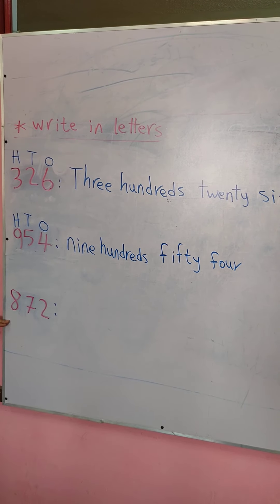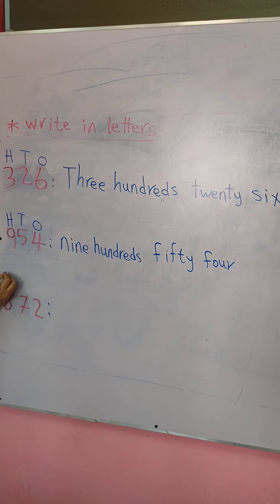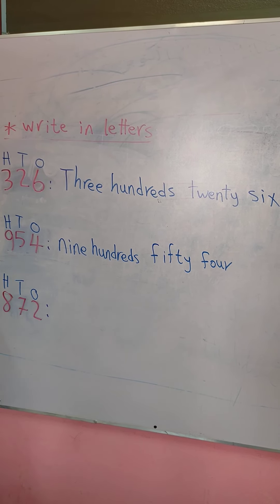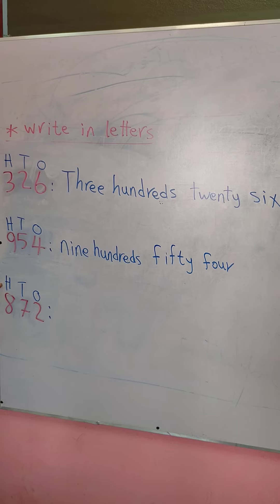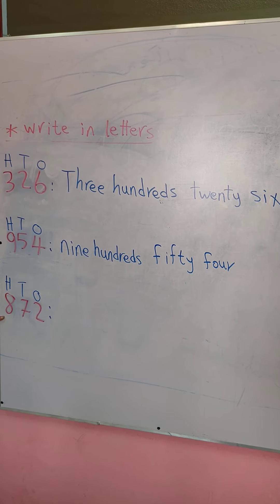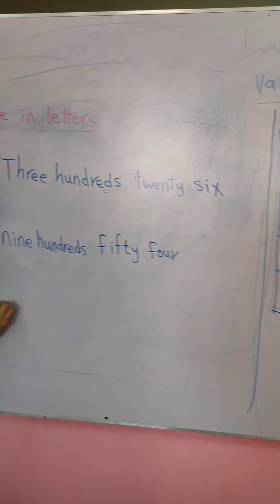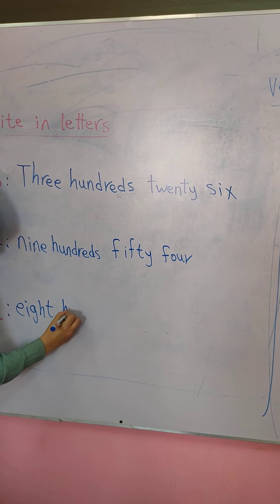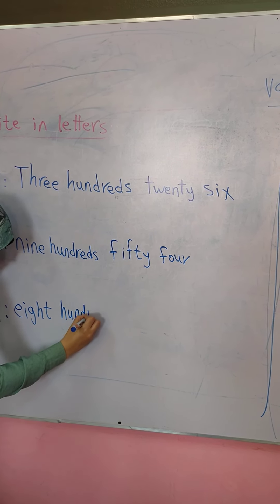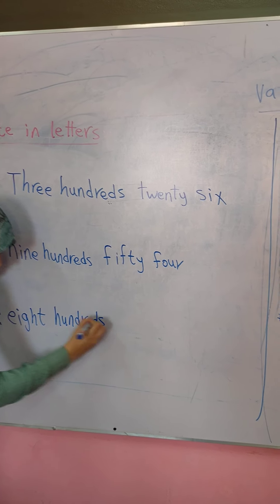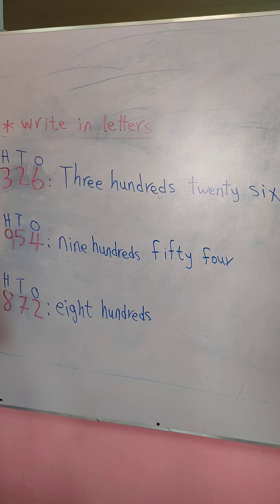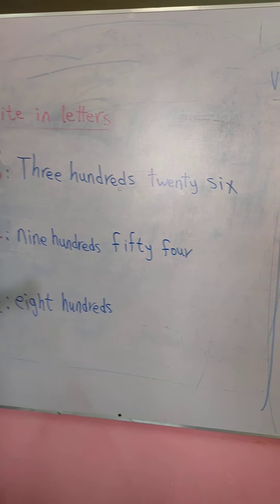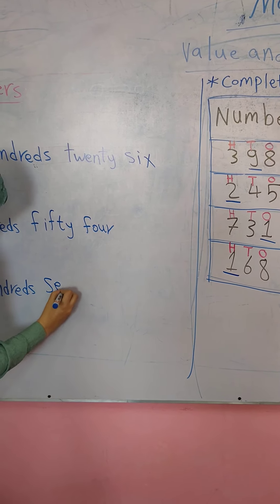Next example: I'll write H, T, O. Start with 8 — 8 is in the hundreds place, so I write eight hundreds. Then I have 72 — so I write seventy-two. Thank you.